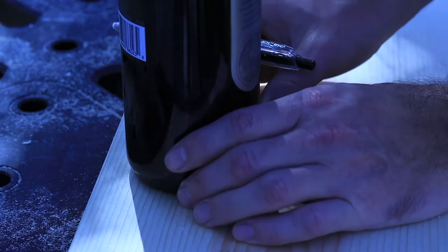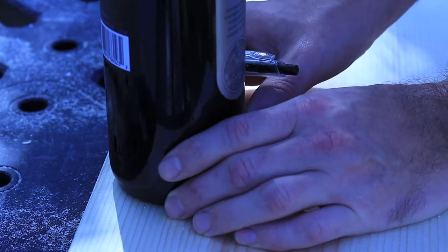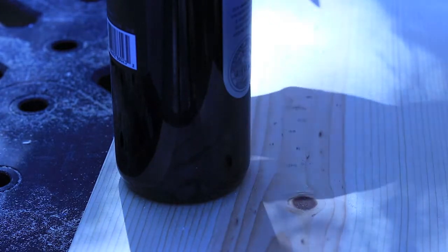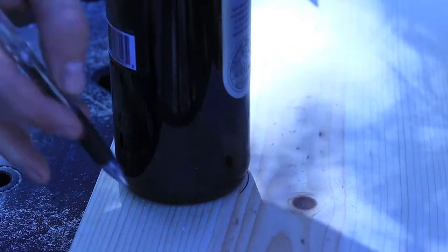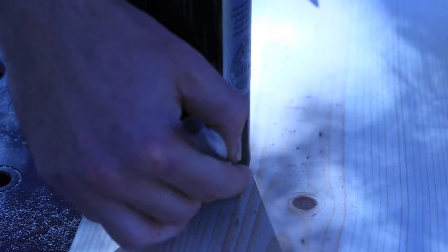Me personally, I'm not really good at free handing anything, let alone a full even circle. That's impossible. So what I do is I just take a wine bottle and trace around that, and that's going to be the wine bottle holder for the bath caddy.